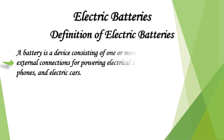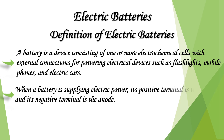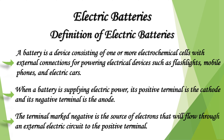A battery is a device consisting of one or more electrochemical cells with external connections for powering electrical devices such as flashlights, mobile phones, and electric cars. When a battery is supplying electric power, its positive terminal is the cathode and its negative terminal is the anode. The terminal marked negative is the source of electrons.